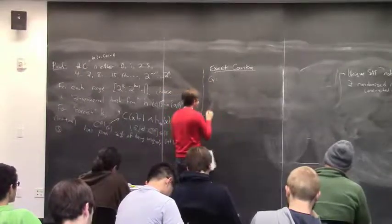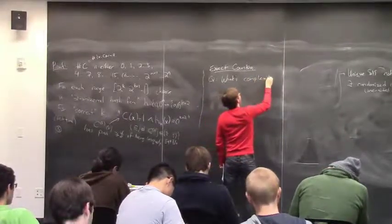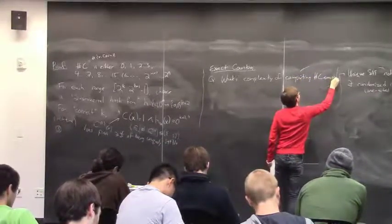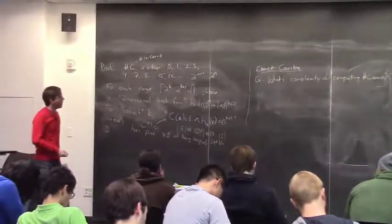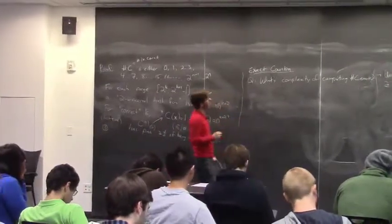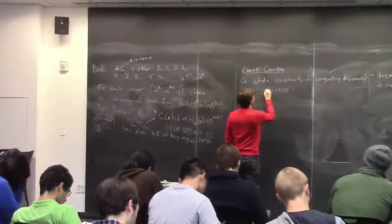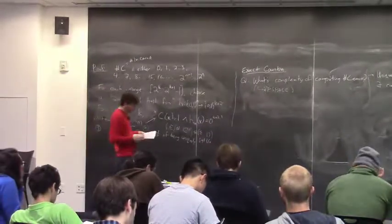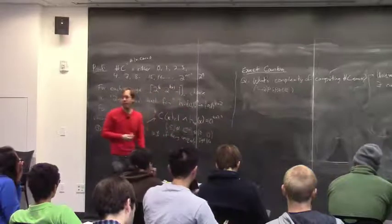We've seen some applications of the ability to approximately compute the number of satisfying assignments to a circuit — or approximately computing the probability that a circuit outputs true. Even better would be to exactly solve counting problems. But we're going to see that that's actually pretty hard. The motivating question: what's the complexity of computing sharp C exactly? This is a function problem, not a decision problem. Certainly it's doable in polynomial space, but it's not so clear how to do it in a smaller class.